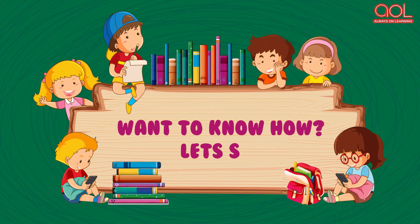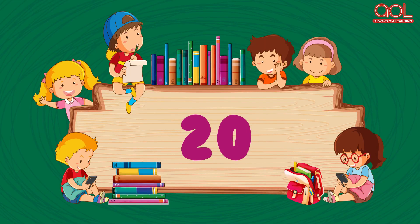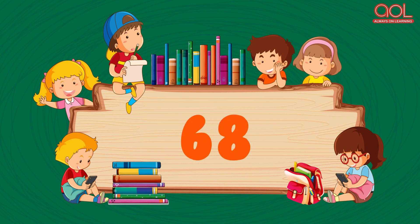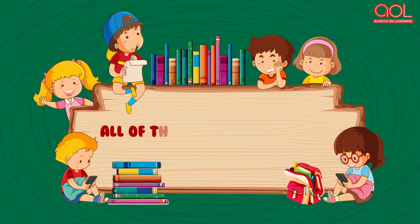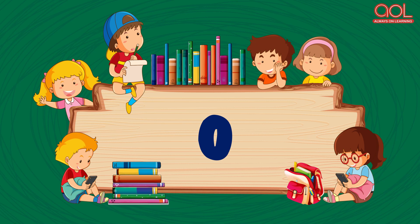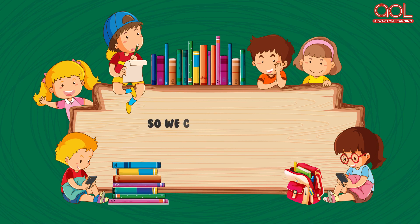Want to know how? Let's see! 20, 32, 44, 56, 68 — all of these numbers end with even numbers, i.e., 0, 2, 4, 6 and 8.